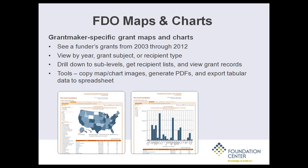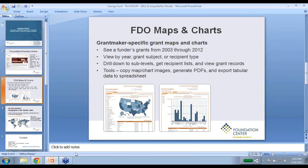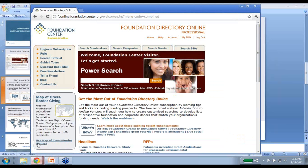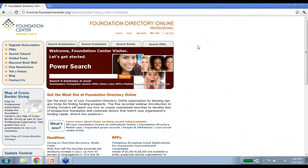The maps and charts show grants indexed from a funder going back to 2003. You can drill down using different variables — year, grant subject, or recipient type — and get to individual grant records. Tools available include creating simple images, generating PDFs, and most valuably, exporting the tabular data to a spreadsheet so you can work with it further. I'm going to switch over now to take a look at Foundation Directory Online.